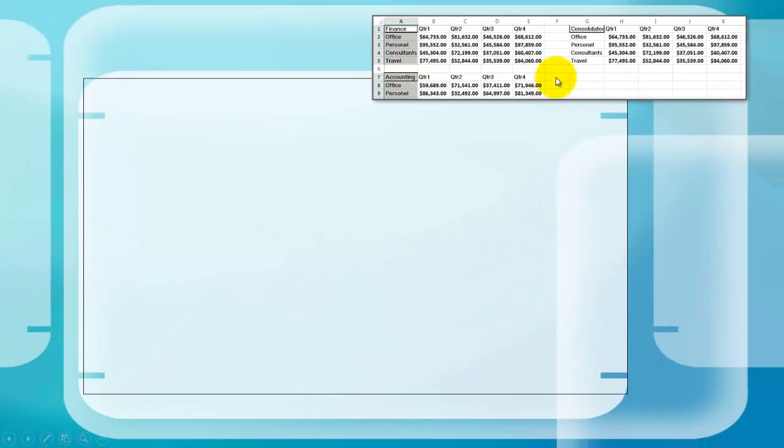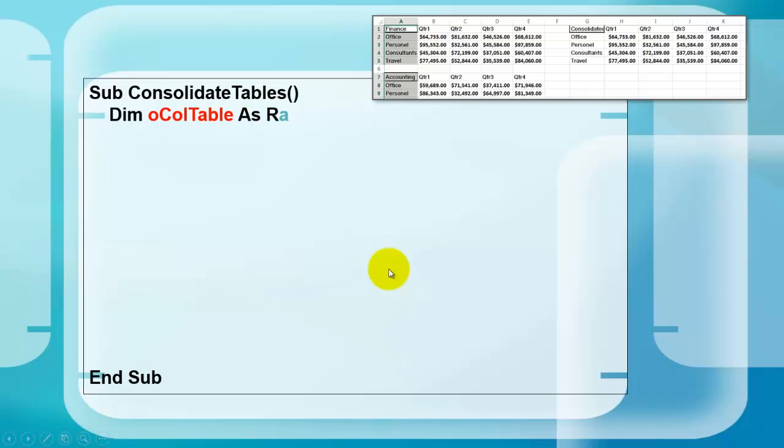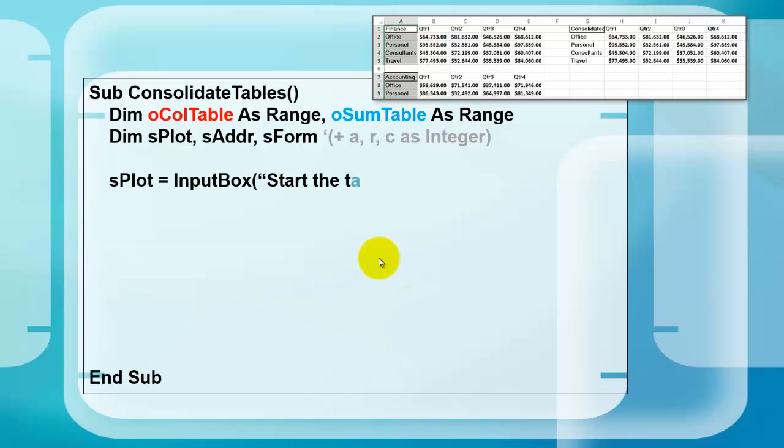Let's go to our simple situation that each section has the same layout. What we are going to do is declare two variables of the range type. Three string type variables, three integer type variables that I didn't need to specify. We ask the user where do you want to start, let's say by default in G1 for our summary report.